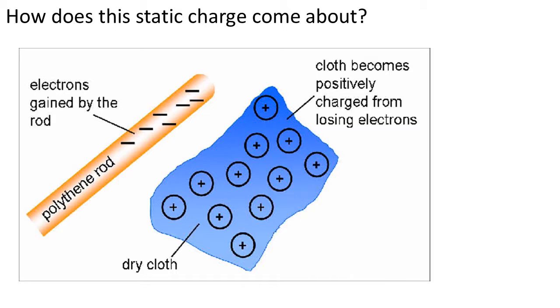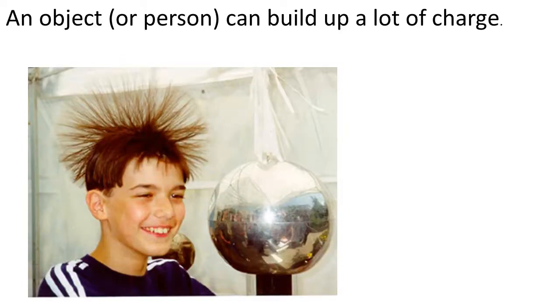You've seen the Van de Graaff generator working. That's basically you've got this belt rubbing against a comb, and it's rubbing charges onto that metal dome. And if you touch it, then those charges will move into you. And if you're standing on an insulator, like a plastic box or a piece of polystyrene, those charges will build up in your body. And the longer you stand on that Van de Graaff generator, the more charges will build up inside you.